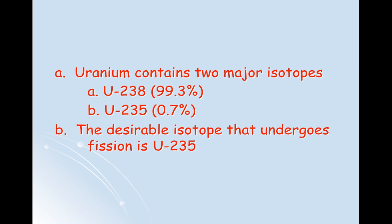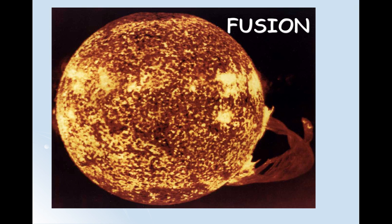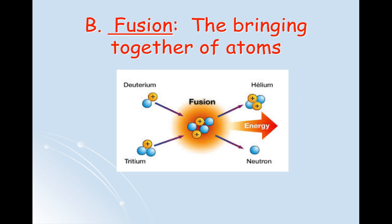Let's get some notes about uranium: uranium contains two major isotopes, U-238 and U-235 — the one we want is U-235. Now let's move on to our last type of nuclear change, nuclear fusion. You can see here a picture of a burning fireball — this is actually a close-up image of a star, because that's one place we see nuclear fusion. Nuclear fusion is literally the bringing together of atoms. Fusion comes from the word fuse, which means to bring together.